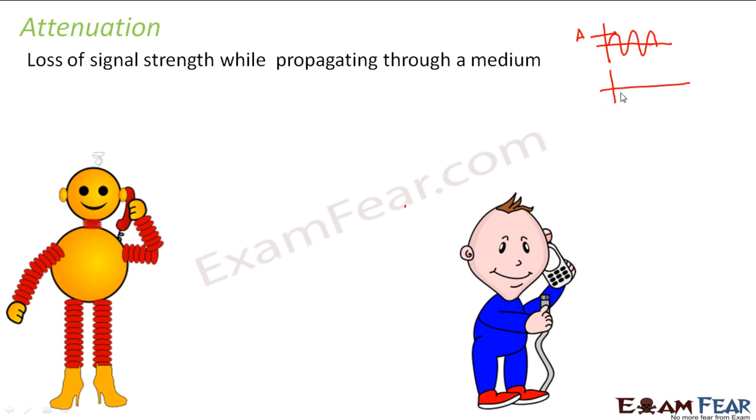Now what might happen is when this signal passes through a medium, the amplitude might start decreasing like this, due to the different types of interferences in the medium. So that is known as attenuation.